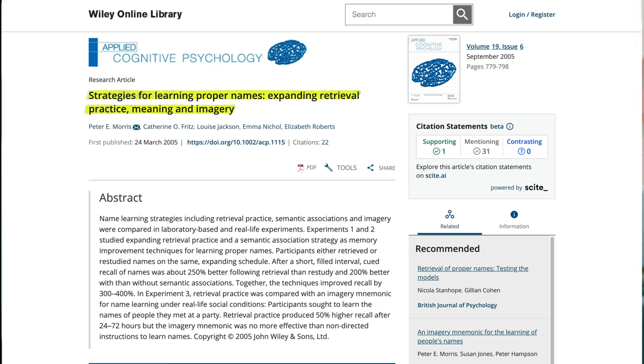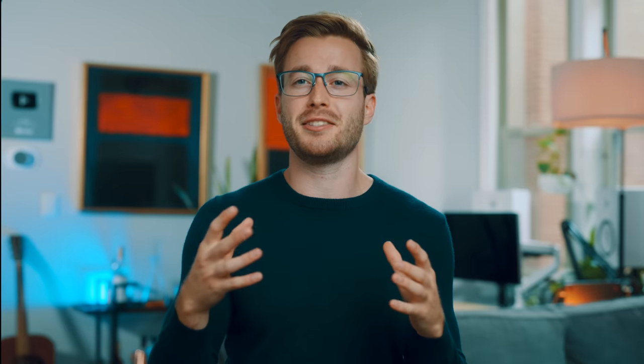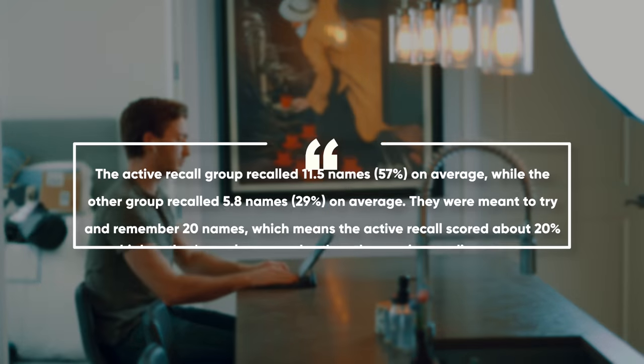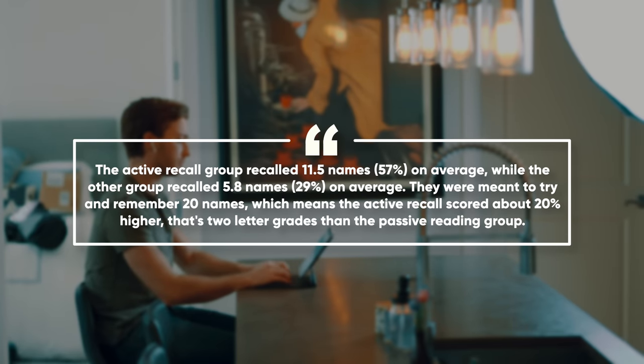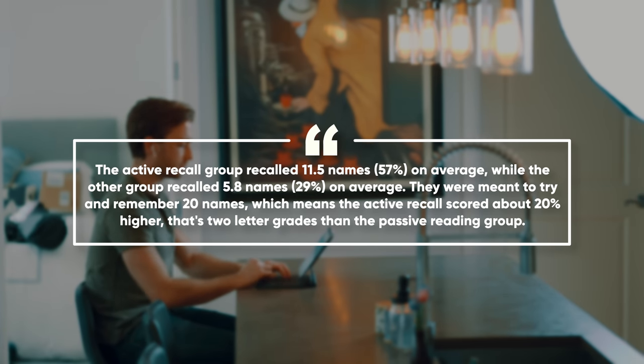In one study, two groups of people were asked to remember as many names as possible in a party scenario — imagine meeting tons of people and having to remember as many names as you can. One group studied using active recall and practice testing, while the other just read over the facts. The active recall group recalled 11.5 names, which is 57% on average, while the other group recalled 5.8 names, which is 29% on average. They were meant to remember 20 names, meaning the active recall group scored about 20% higher — that's two letter grades.